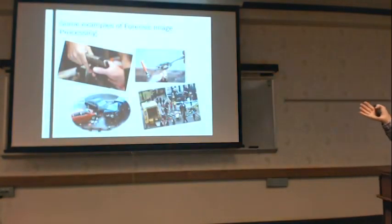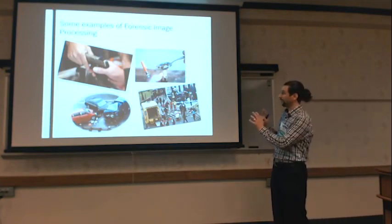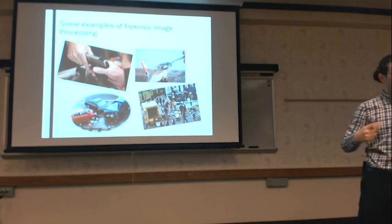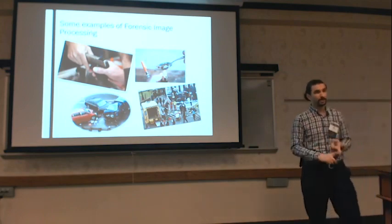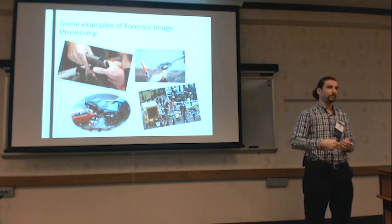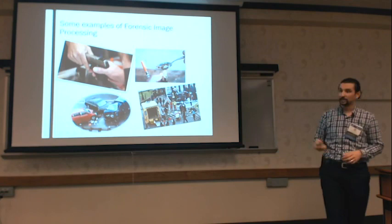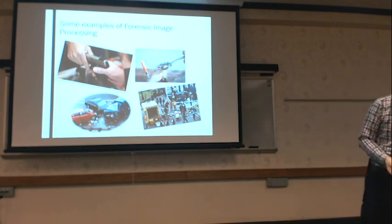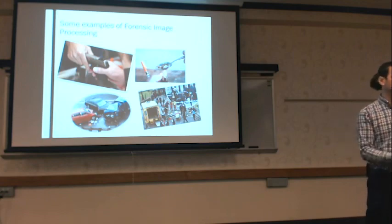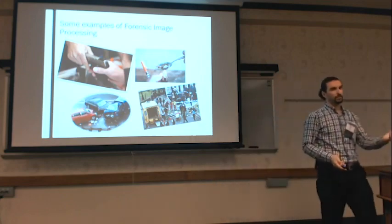These use cases were identified through communication with law enforcement in three different states, and we came up with four different categories. One is weapons — to automatically identify weapons related to cyberbullying or cyber harassment cases, such as someone sending a picture of a knife or gun with a threat. Drug usage is also a significant category. Hit-and-run cases — car crashes — where witnesses take a picture of the vehicle. And some terrorist attack cases related to bombing incidents specifically.